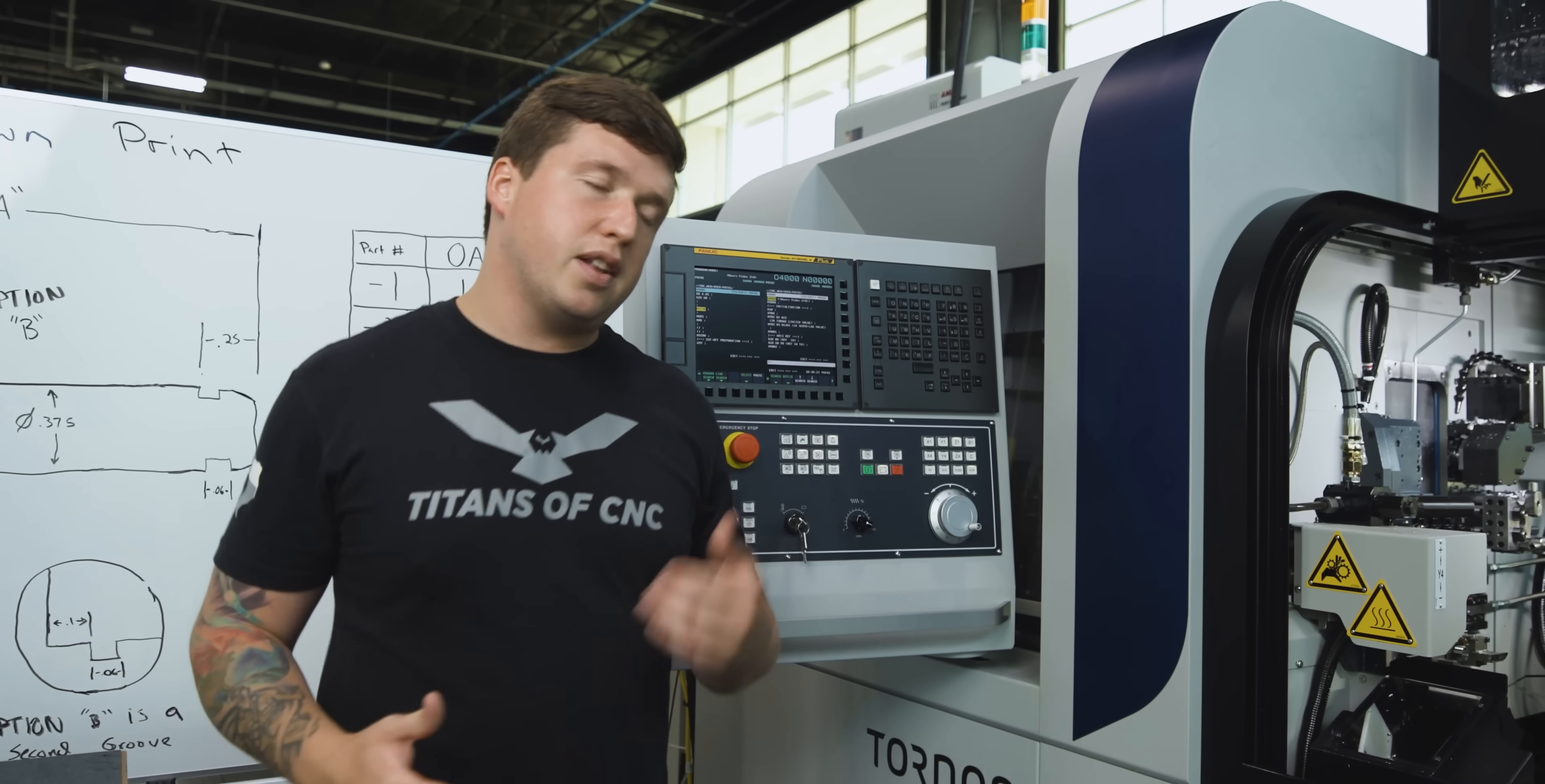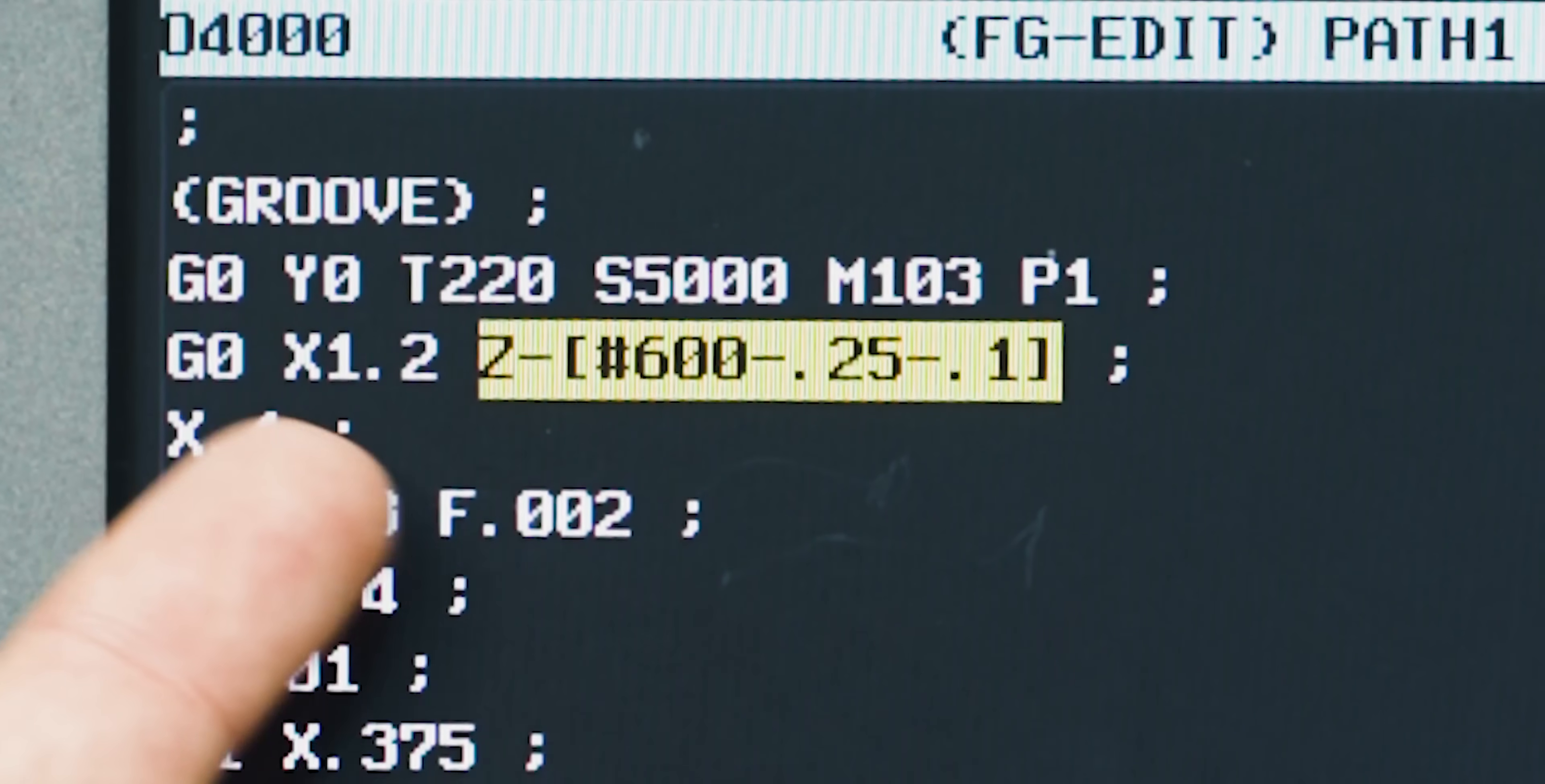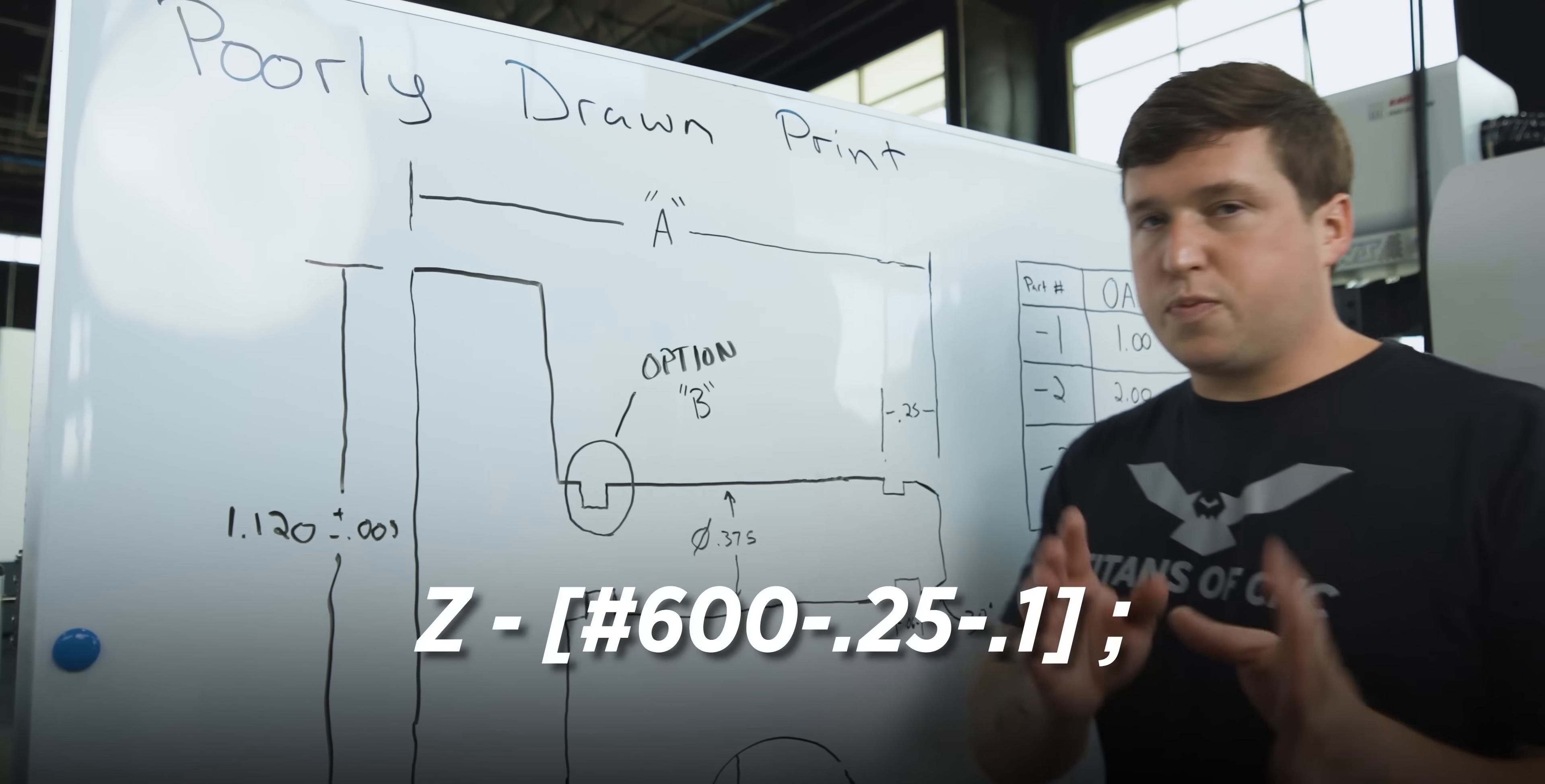I want to show you how the groove was written. The first groove and the second groove are programmed exactly the same except for one difference. I took my overall length, minus 0.250 for the head, then minus 0.1 for where the groove starts. So let's break this down.